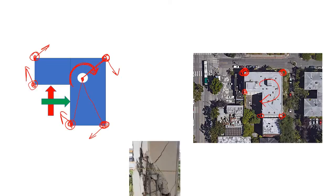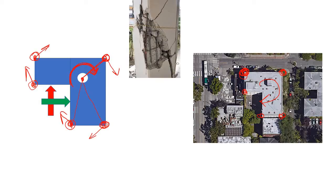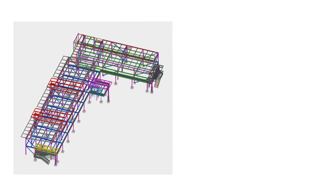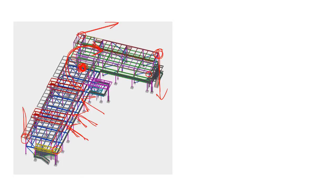Now consider a steel structure with a similar L-shaped plan. Like the concrete structure, all corner columns will be affected. Additionally, when a seismic lateral load is applied and torsion is created about the CG, tangential forces are generated at each column location throughout the structure.